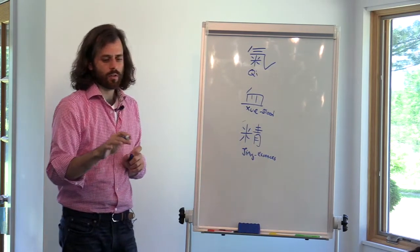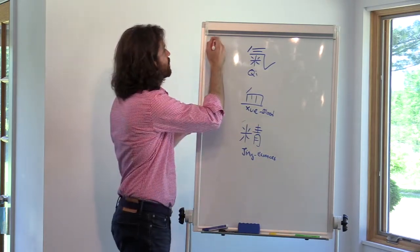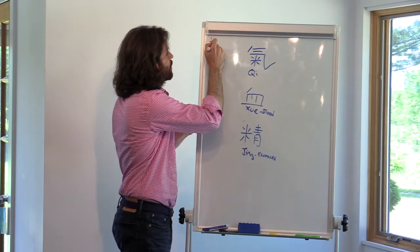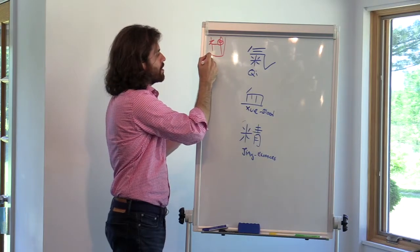Now in your sheet you see in the top left corner, and I'll do this in red because red is the color of the heart and fire and yang. Now you have this thing up here. This is Shen. This is spirit.